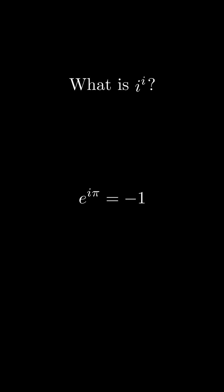Let's start with Euler's identity. First, we take the square root of both sides, which is the same as raising both sides to the 1 half power. The right side simplifies to i.